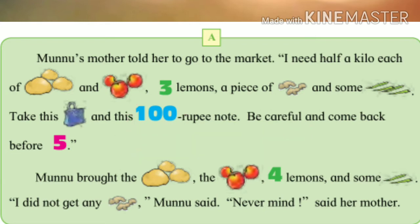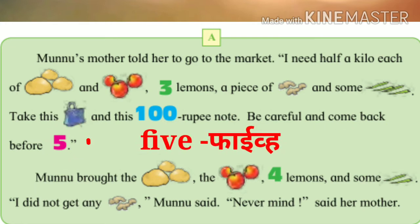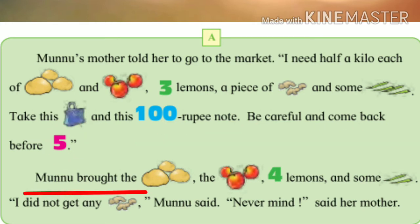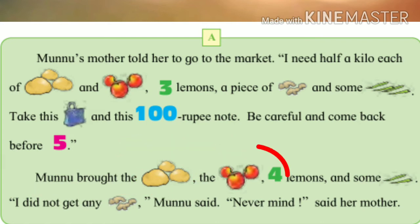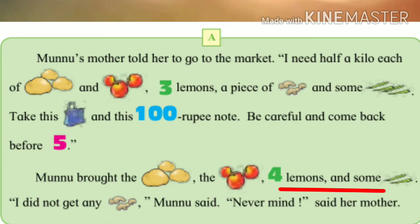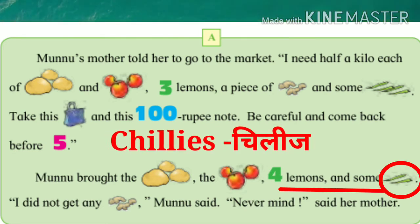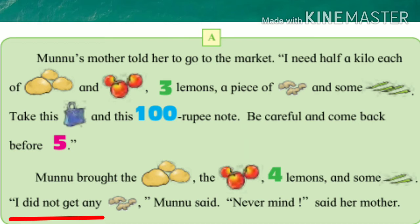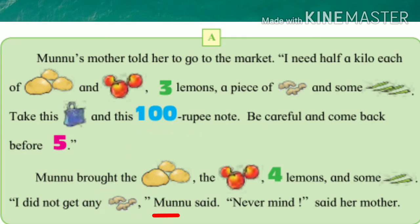Be careful and come back before five. Munnu brought the potatoes, the tomatoes, four lemons and some chillies. I did not get any ginger, Munnu said. Never mind, said her mother.